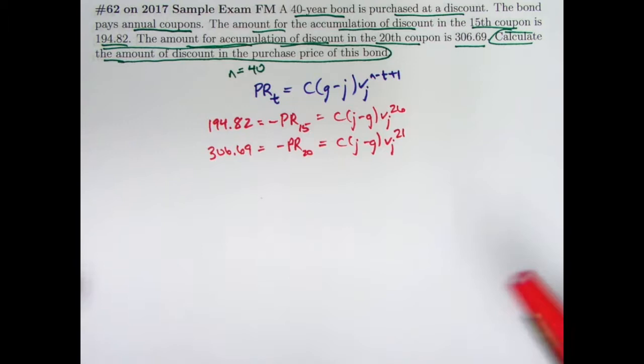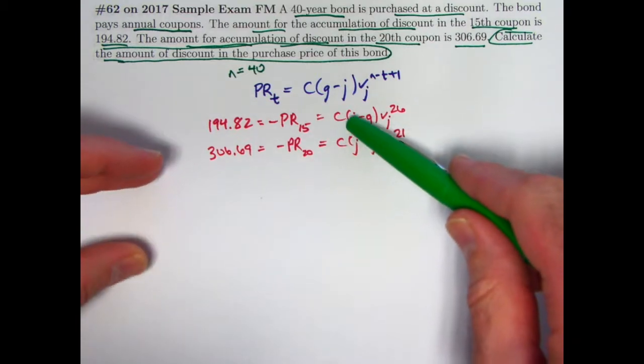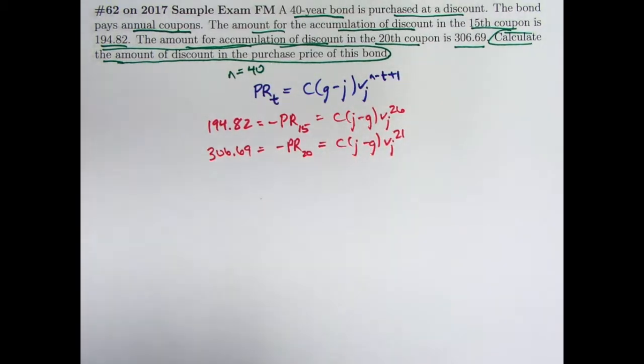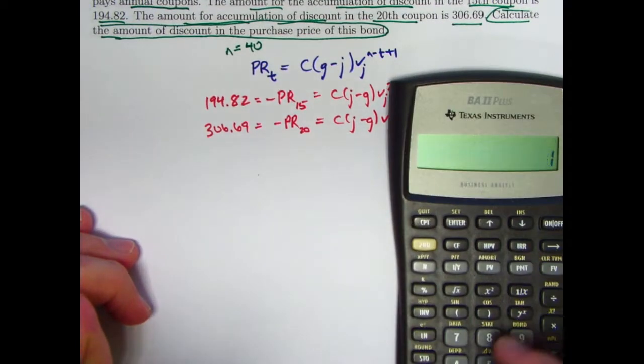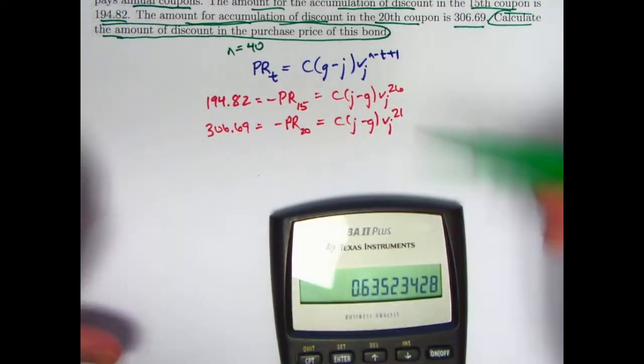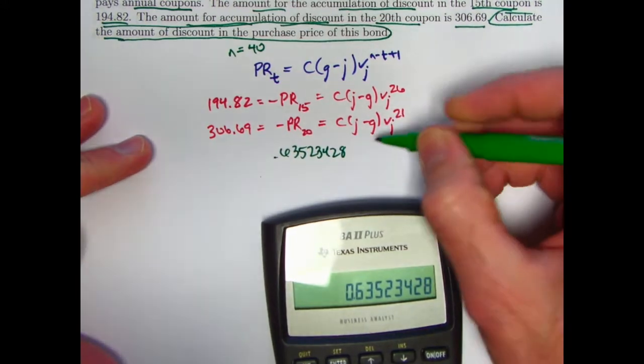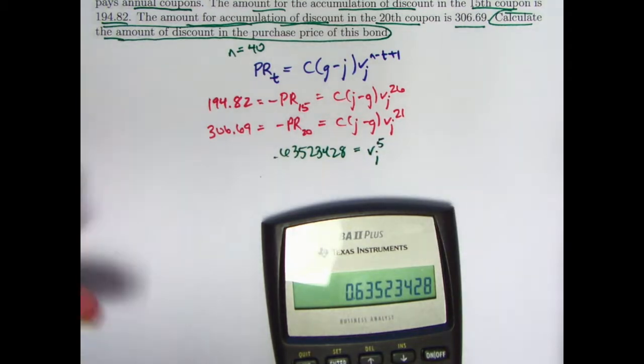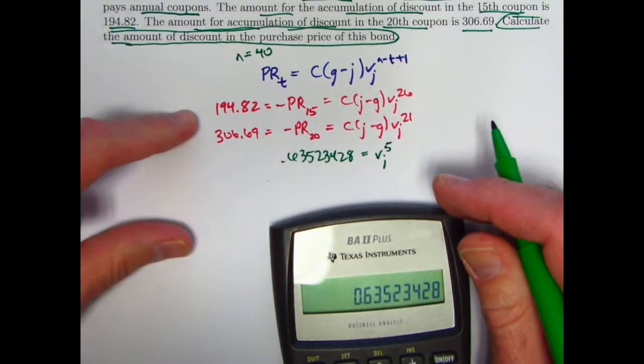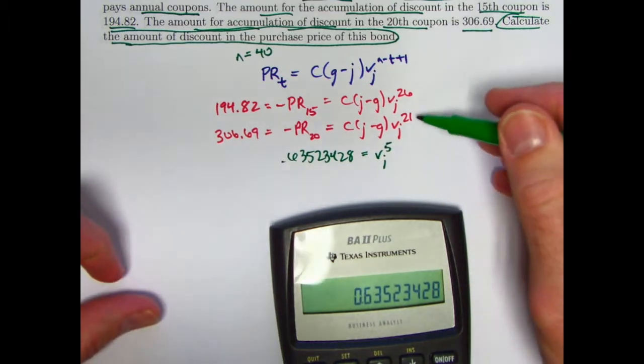It may not be clear how this information will help us find the amount of discount in the purchase price, but certainly one thing that should stand out to you right away is, oh, if I divide one equation by the other, say the top by the bottom, this part, C times in parentheses j minus g, those will cancel. And the v_j's will be reduced to a v_j to the fifth power. So 194.82 divided by 306.69 equals 0.63523428 will then equal v_j to the fifth power. Okay, I divided the top equation by the bottom equation. 194.82 divided by 306.69 is this. Here the C's and the j minus g's cancel, and the v_j's cancel to give you a fifth power.